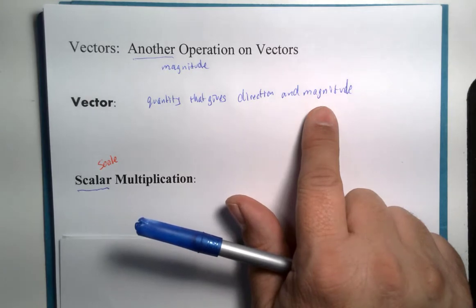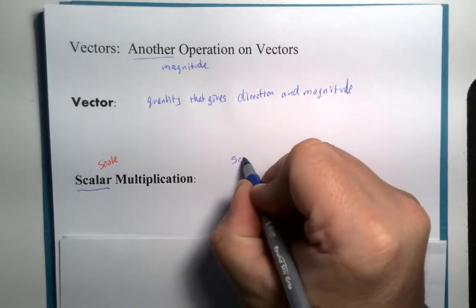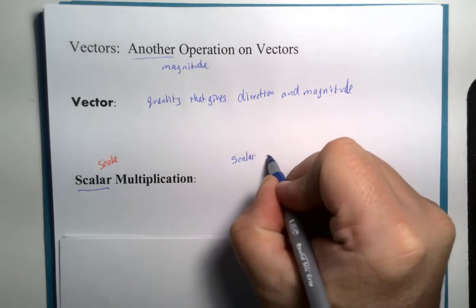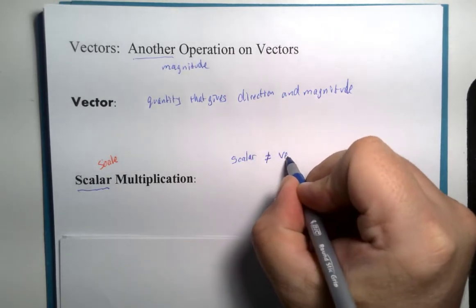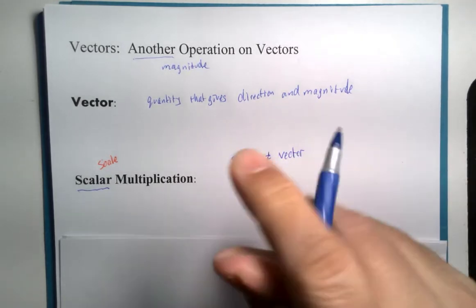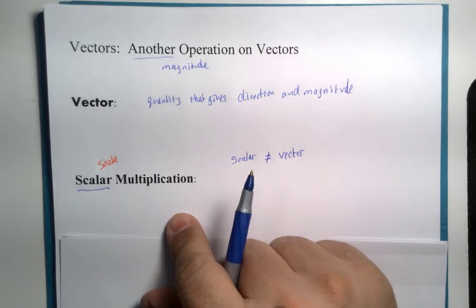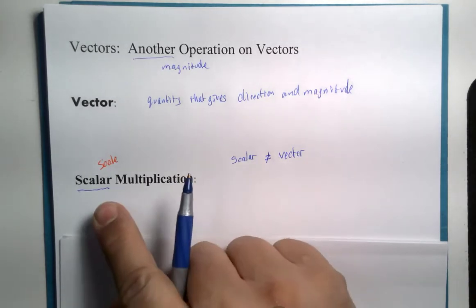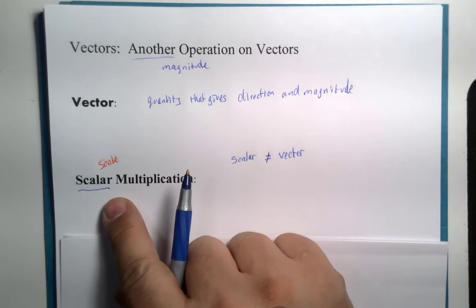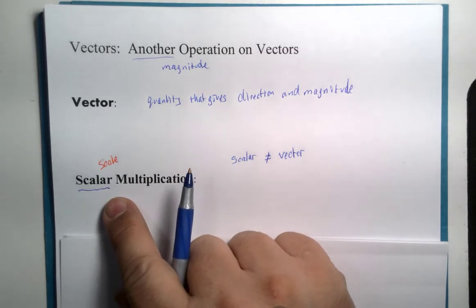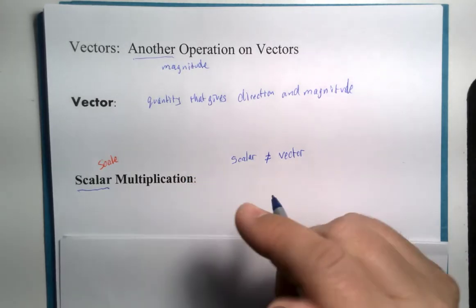So the concept of a scalar is, well first of all, it's not a vector. Numbers by themselves are considered scalars. And later on we will find out that there are functions that are vector functions and there are functions that are scalar functions. But let's look at a simple case.